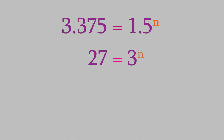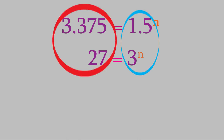We look at the ratio between these two numbers and between these two. In this case, the ratio between 27 and 3.375 is 8. Meanwhile, the ratio between 3 and 1.5 is 2. So now we have this equation and we need to find the exponent: 8 equals 2 raised to an exponent. If you know how exponents work, you can see that the exponent here is 3.